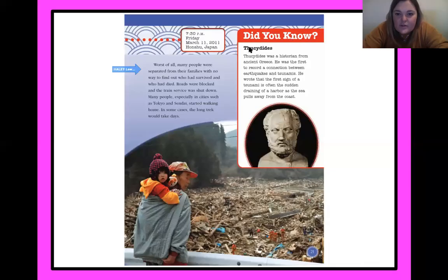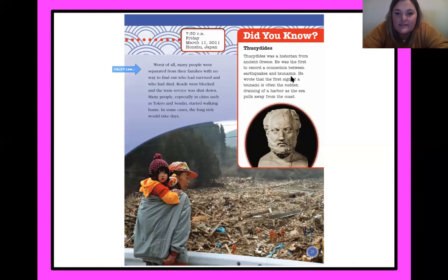Did you know? Thucydides was a historian from ancient Greece. He was the first to record a connection between earthquakes and tsunamis. He wrote that the first sign of a tsunami is often the sudden draining of a harbor — the sea pulling away from the coast.